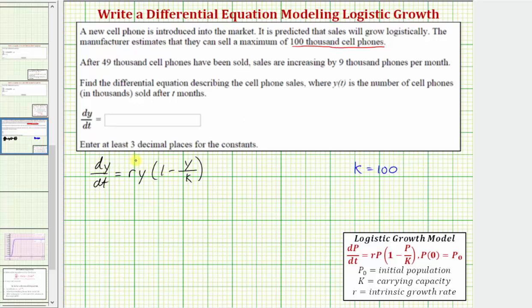So if we can find r, the intrinsic growth rate, we can write the differential equation that models this growth. And we can find r using the information from the sentence here.